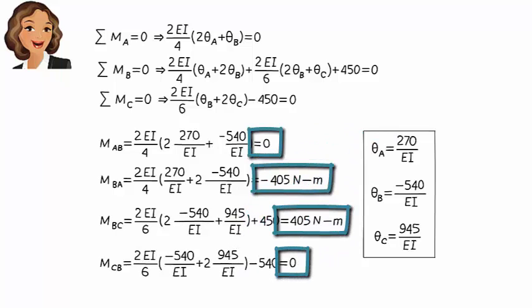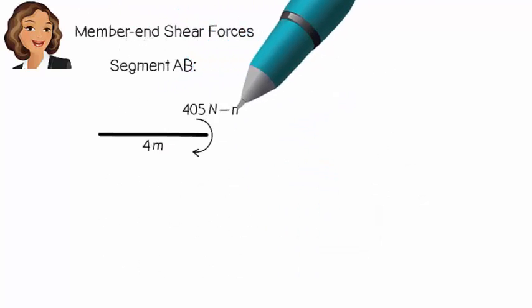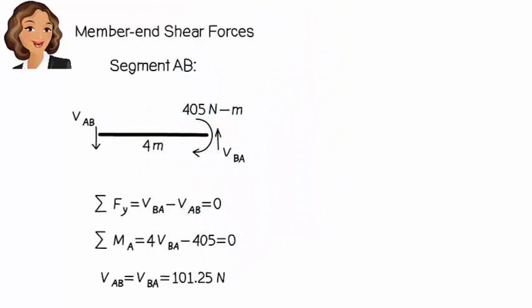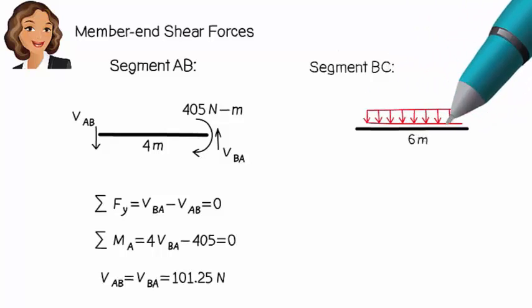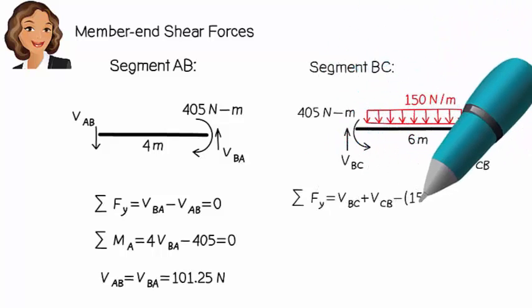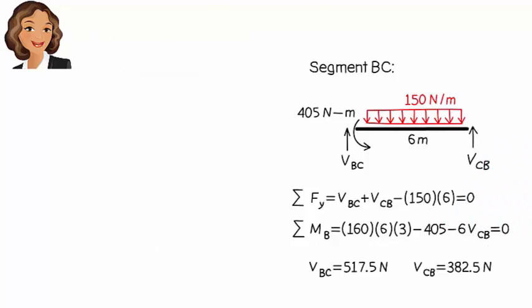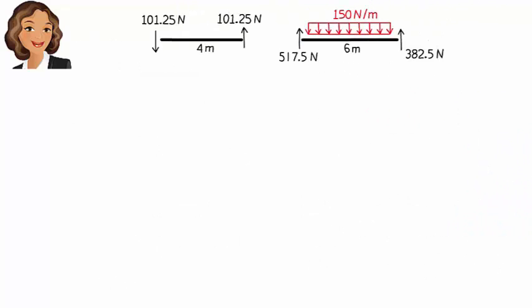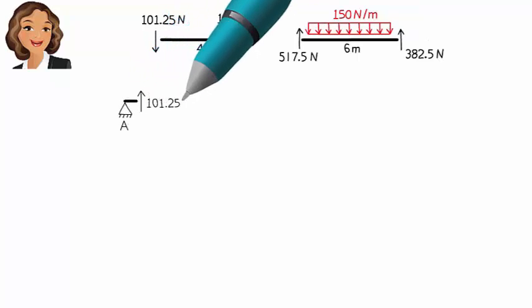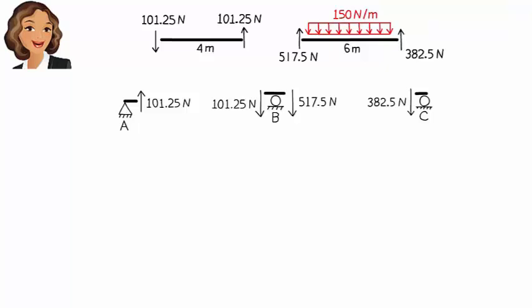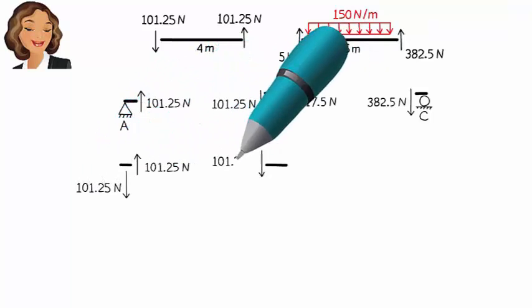Knowing the member-end moments, we can easily determine member-end shear forces. For segment AB and segment BC, we compute the shear forces at each end. We then transfer member-end shear forces to the joints, so the support reactions are determined.